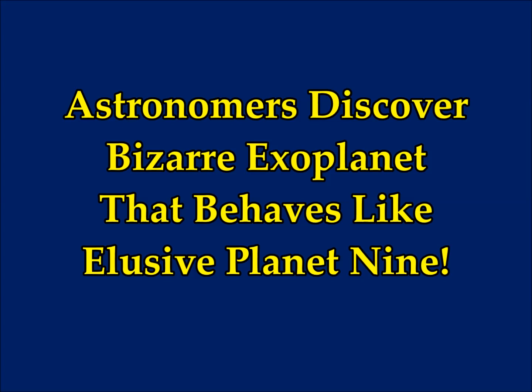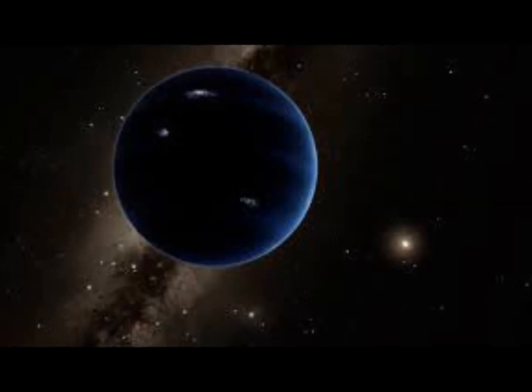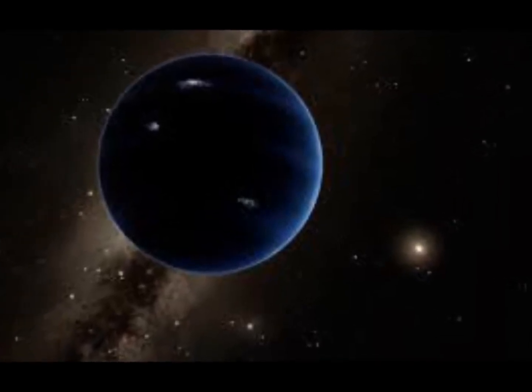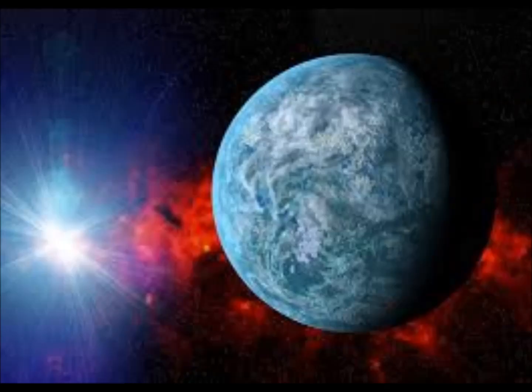Astronomers discover a bizarre exoplanet that behaves like the elusive Planet 9. They've yet to find Planet 9, a hypothetical planet in the outer region of our solar system, and according to some scientists' calculations.